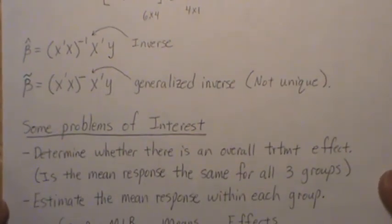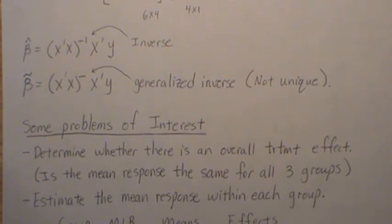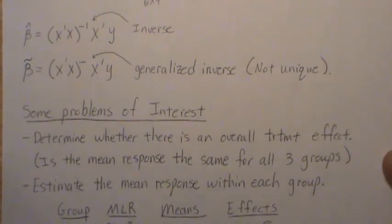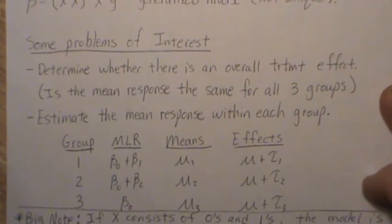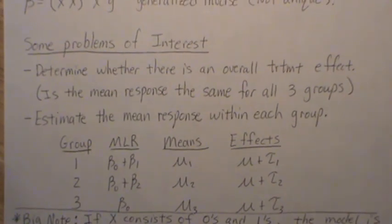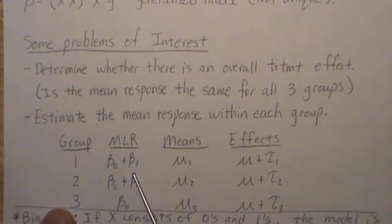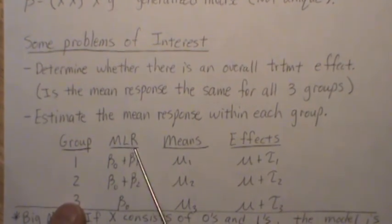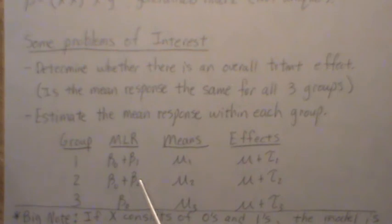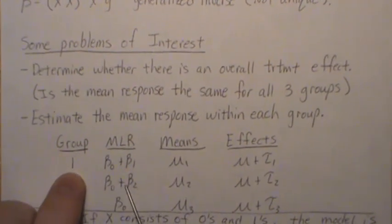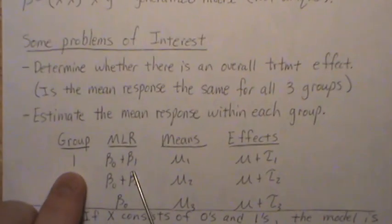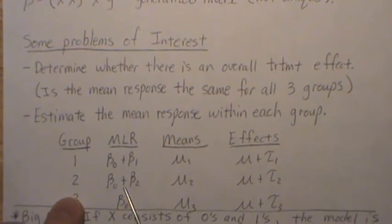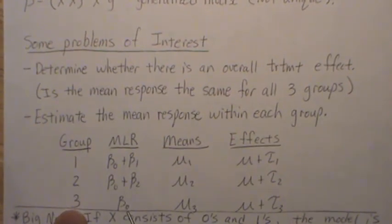Now, some problems that we're interested in is determine whether there's an overall treatment effect, is there a mean response the same for all three groups, or is one of them better than another. We want to estimate the mean response within each group. So if we're in the multiple linear regression model, where we use dummy variables or indicator variables, the group one effect is beta 0 plus beta 1, this is the group two effect, and the group three effect is just beta zero.